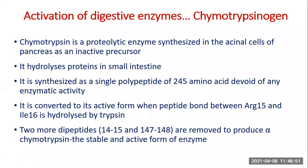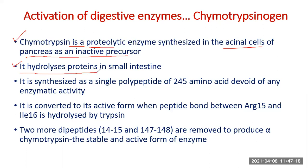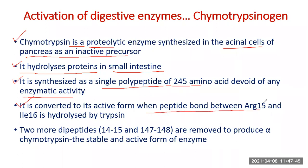Let's look at the activation of the digestive enzyme chymotrypsin. Chymotrypsin is a proteolytic enzyme synthesized in the acinar cells of the pancreas as the inactive precursor chymotrypsinogen. It hydrolyzes proteins in the small intestine. It is synthesized as a single polypeptide of 245 amino acids, devoid of any enzymatic activity.